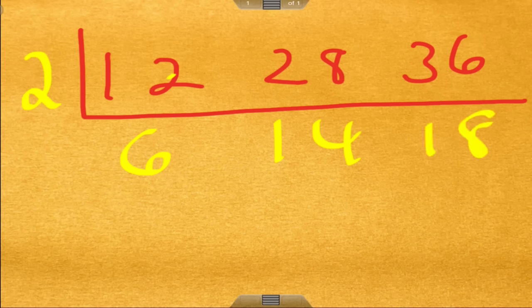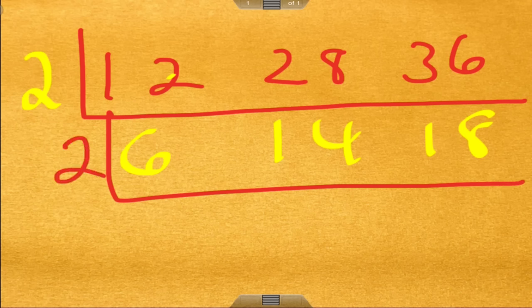Now I look at each of these, and I say, okay, I can take 2 out. So 6 divided by 2 is 3, 14 divided by 2 is 7, 18 divided by 2 is 9.